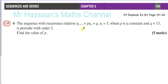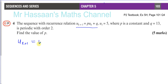So what does this mean? A recurrence relationship is one where you can find a term from the previous term. U_{k+1} means to get a particular term, you take the constant P, multiply it by U_k — the term before the one you want — and add the constant Q.